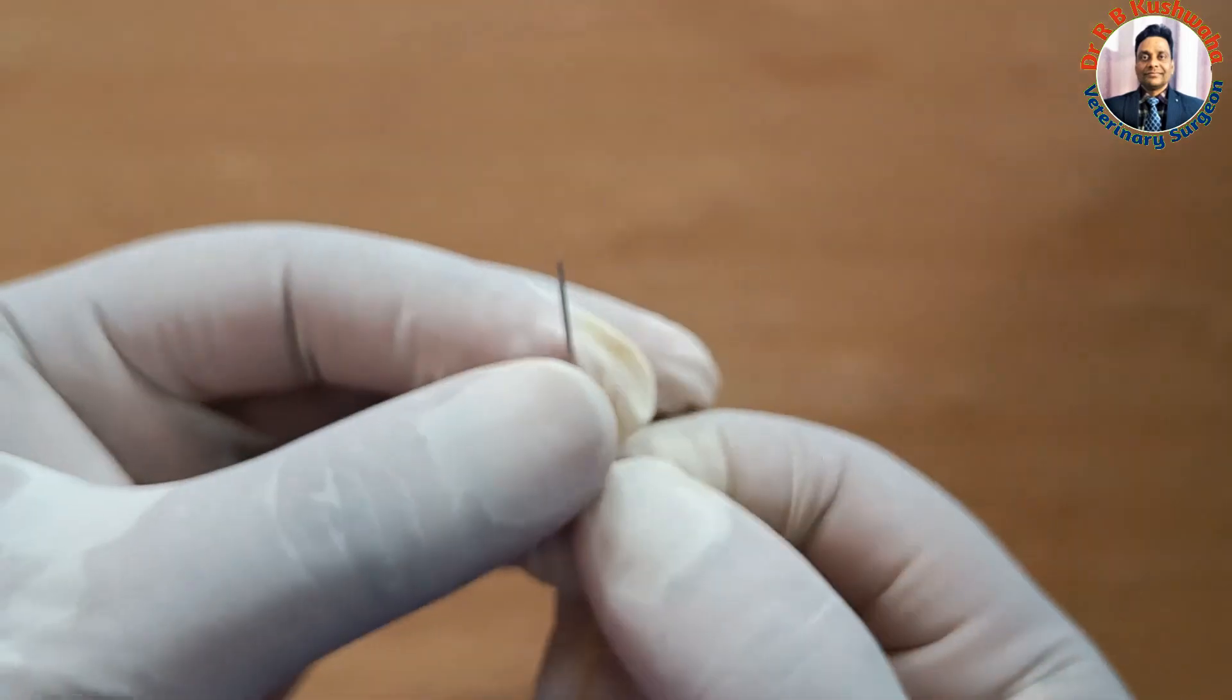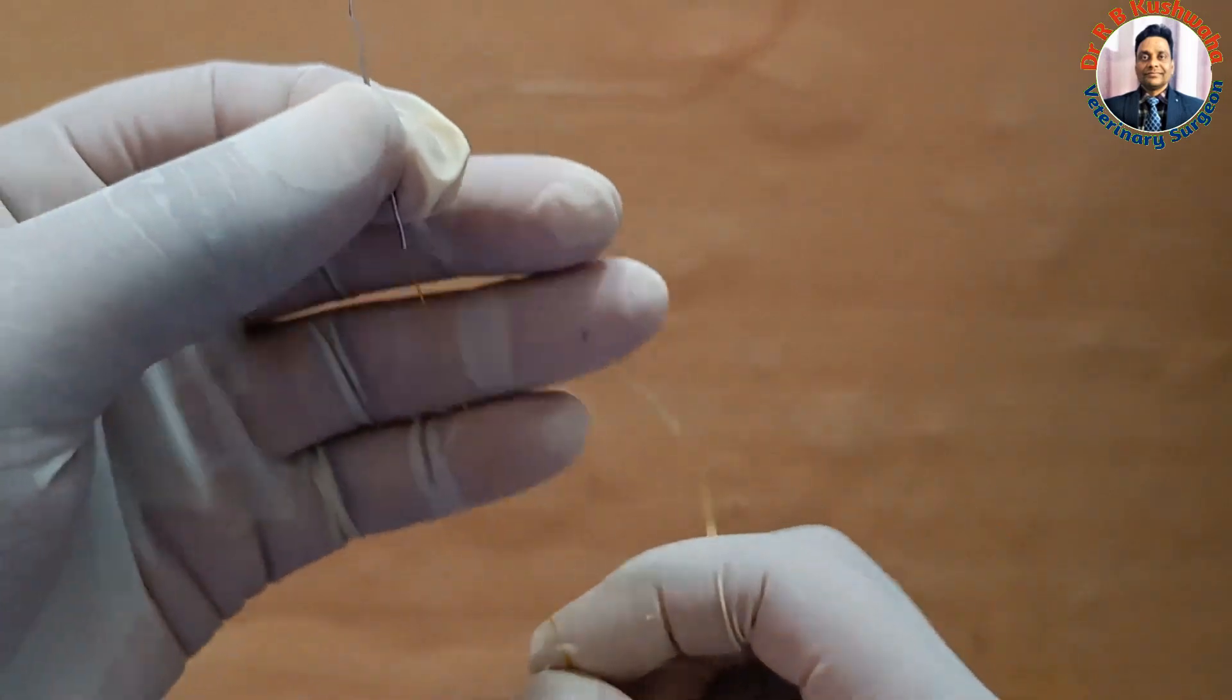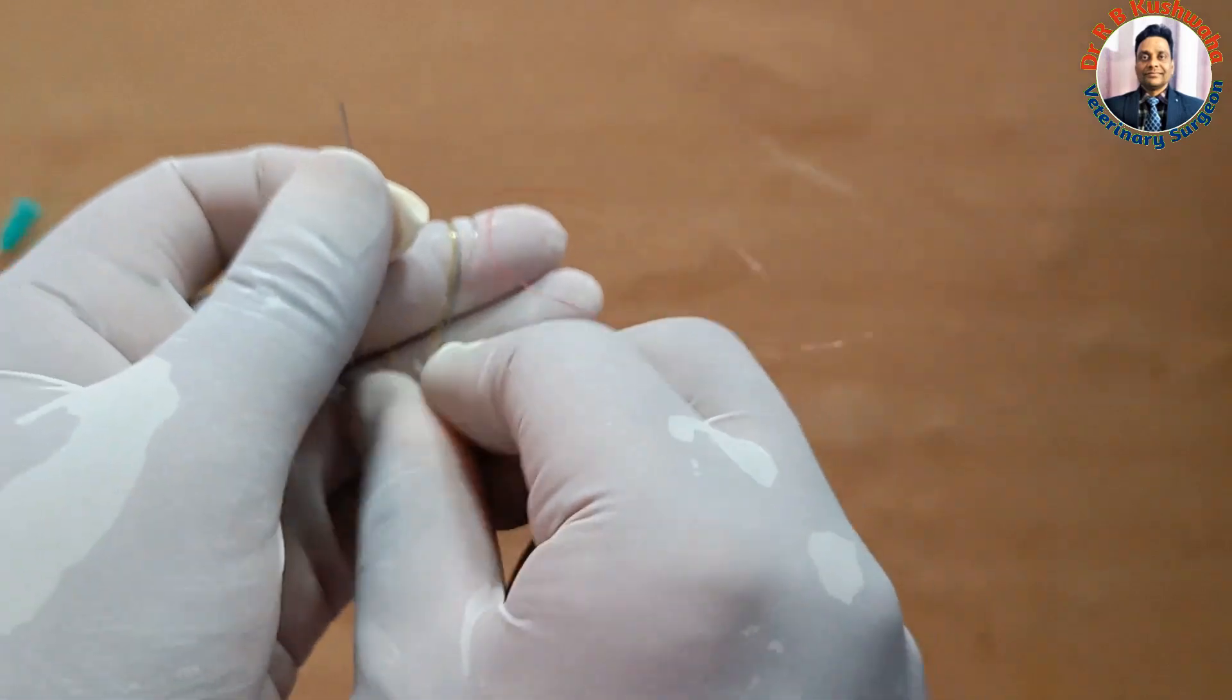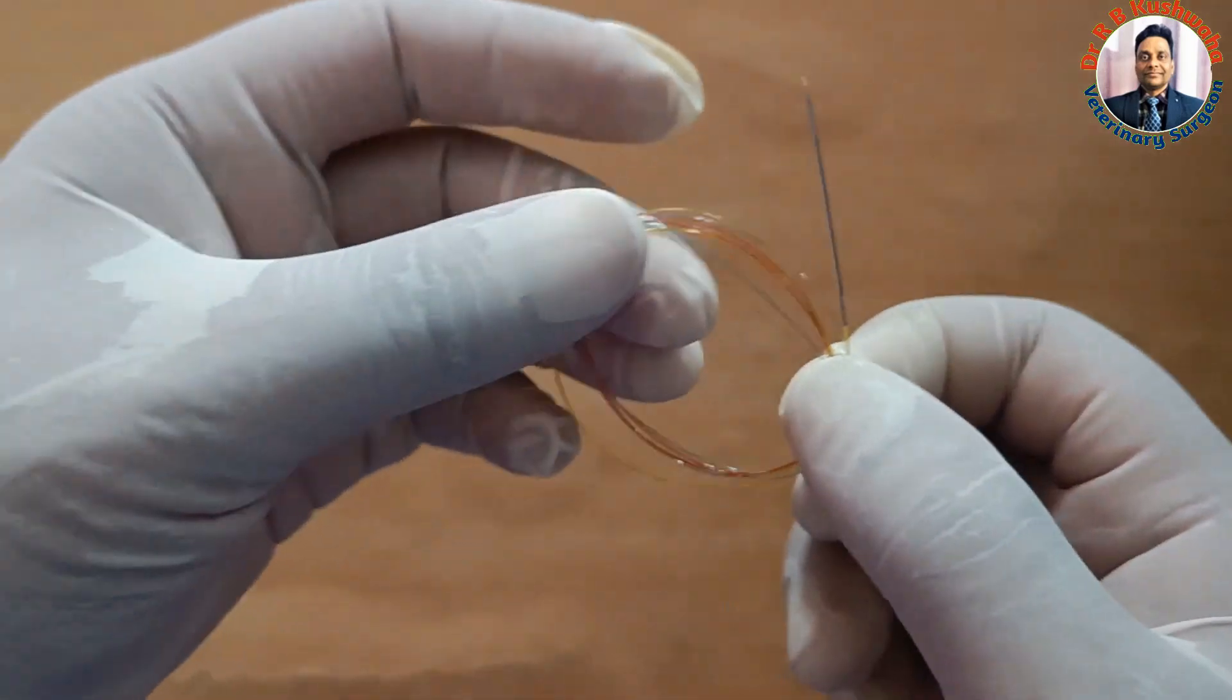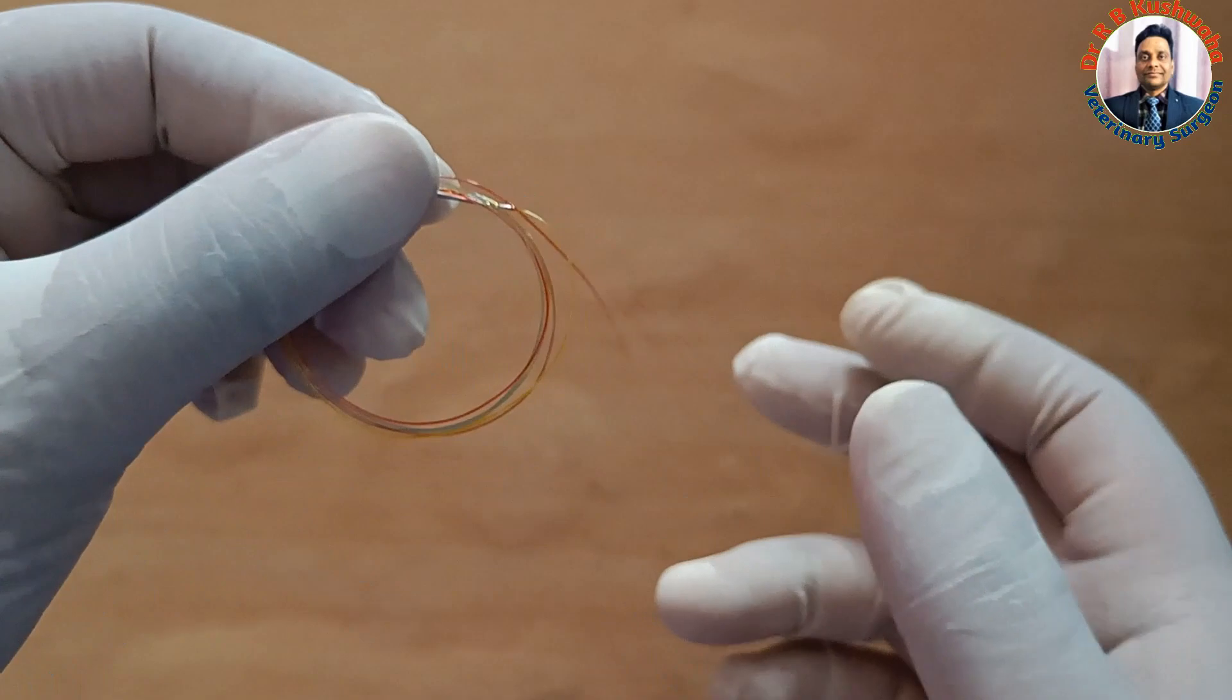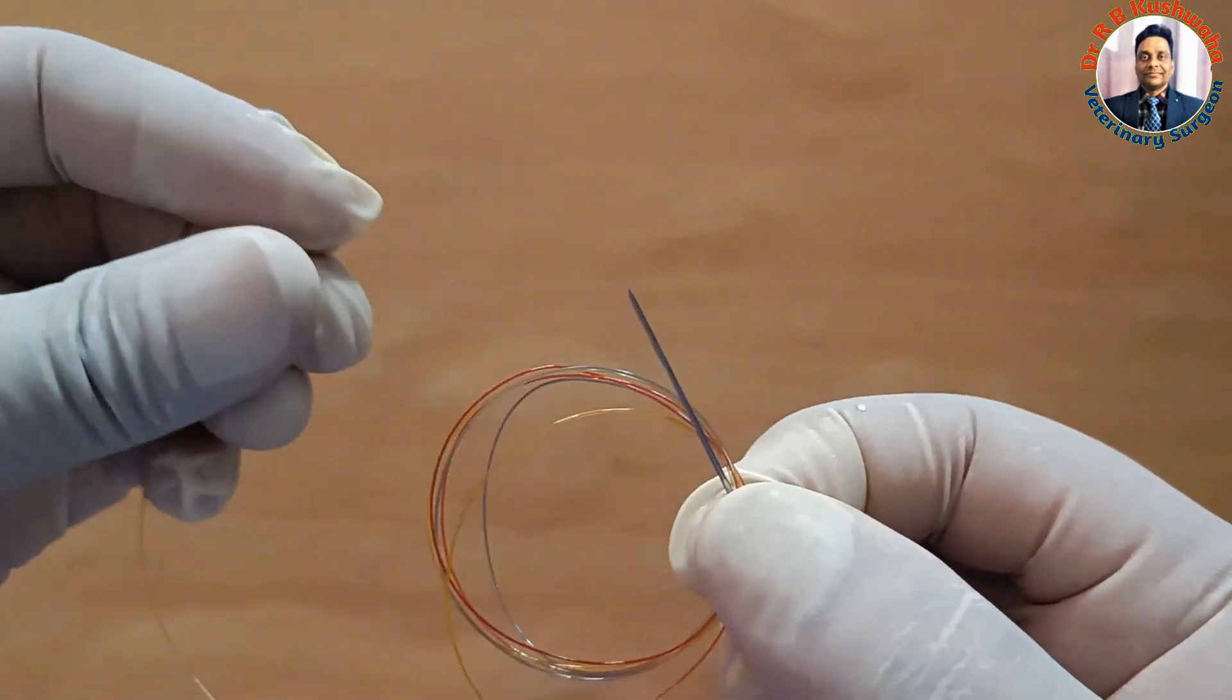Now it is ready for suturing. If you need the straight needle, it acts as a straight suture needle. We should not use it as such - at least after making this one we make a loop like this, and then we dip in the spirit.